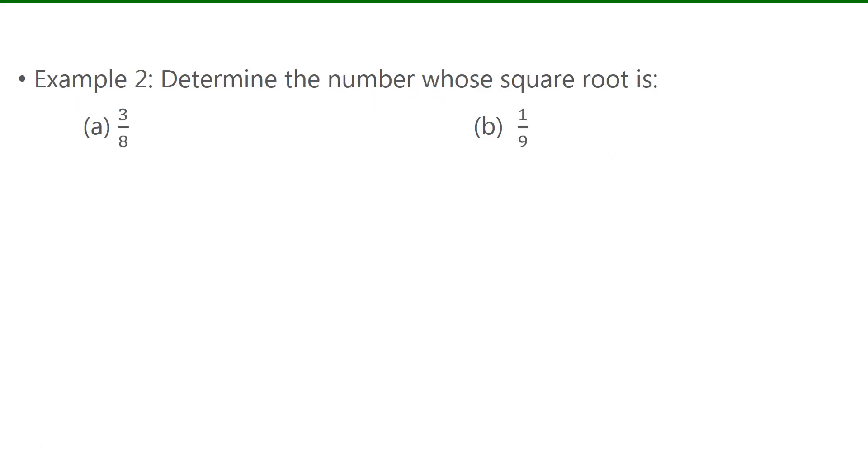For example 2, we have to determine the number whose square root is 3 over 8. So the square root of some number is 3 over 8. To find that number we can just square 3 over 8. When we square something it's the same as multiplying it by itself. Multiplying the numerators and multiplying the denominators together gives me 9 over 64.